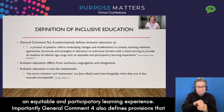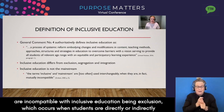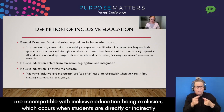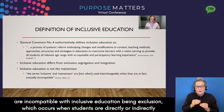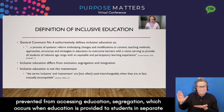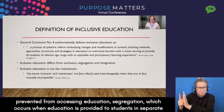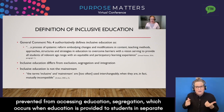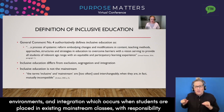Importantly, General Comment Four also defines provisions that are incompatible with inclusive education: being exclusion, which occurs when students are directly or indirectly prevented from accessing education; and segregation, which occurs when education is provided to students in separate environments.